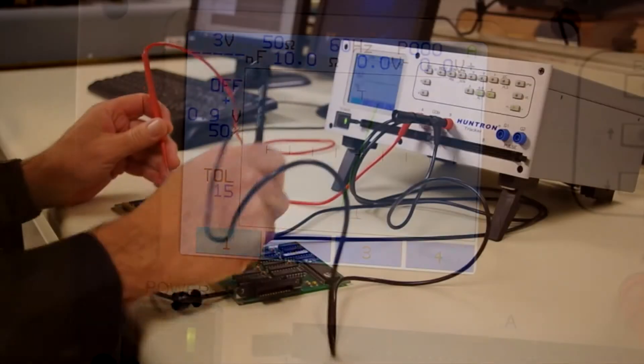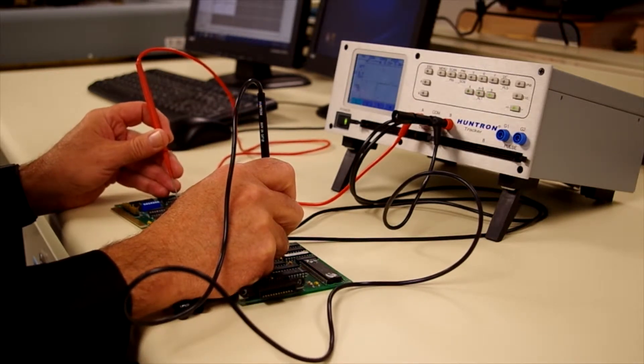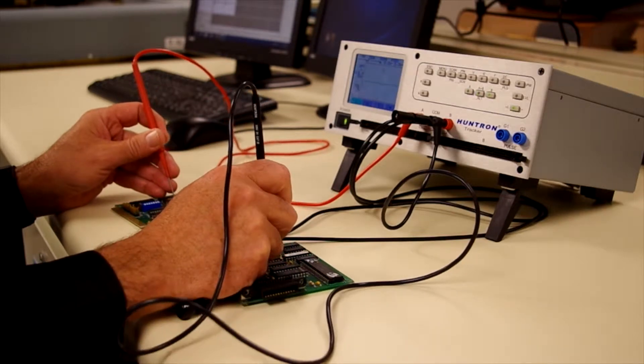Fault location is based on comparing signatures from a good board to a bad board. All trackers have an A and B channel that make for easy signature comparison.